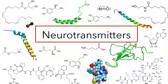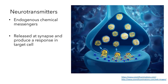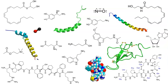Let me give you an introduction to neurotransmitters. Neurotransmitters are endogenous chemical messengers — by endogenous I mean that they are compounds that the body produces itself. They're released at the synapse and they produce a response in the target cell. There are lots of neurotransmitters; we think that there are probably as many as a hundred substances that can act as neurotransmitters. Here I've shown you the structure of some of the compounds that we know act as neurotransmitters in vertebrates.